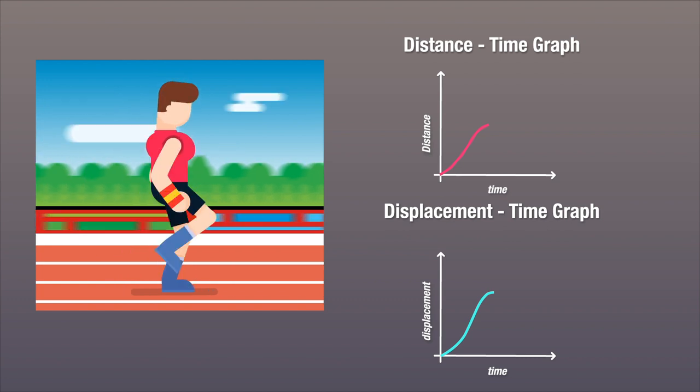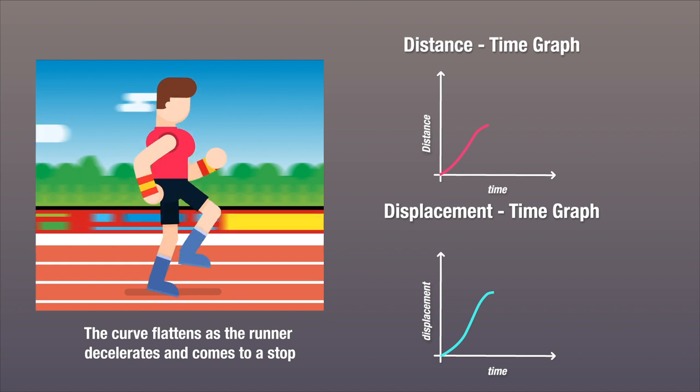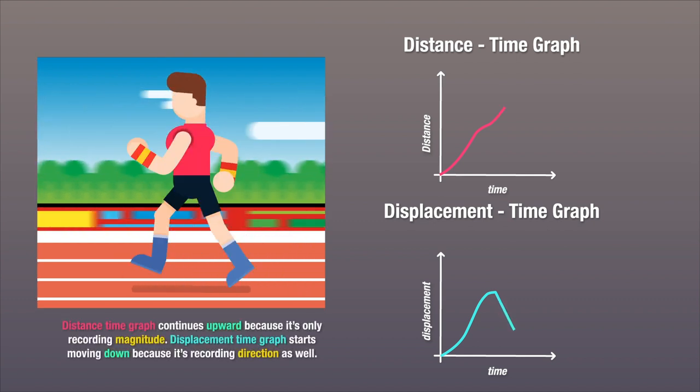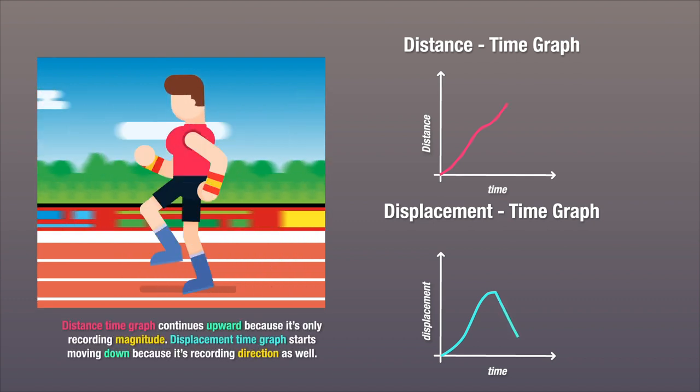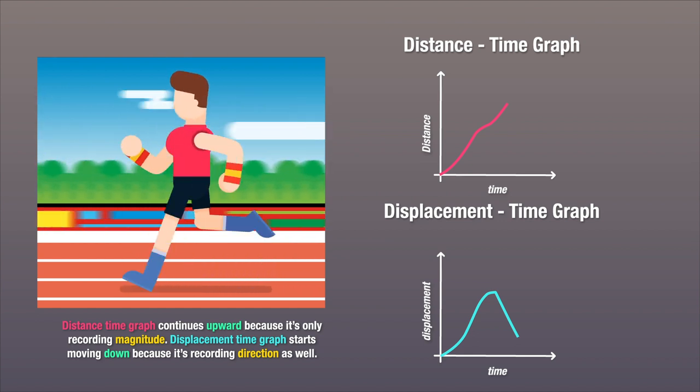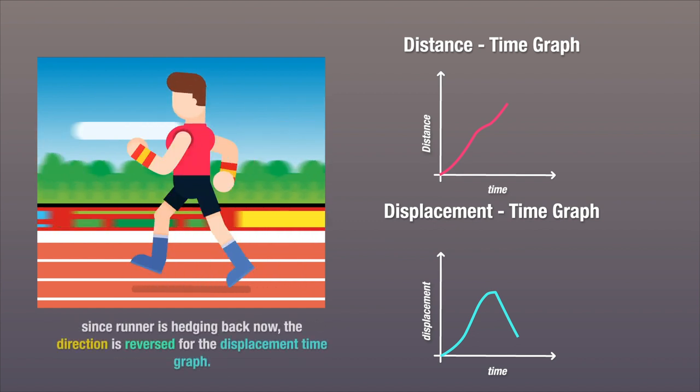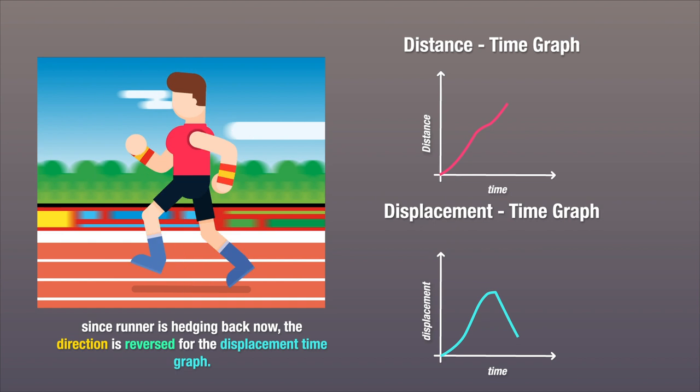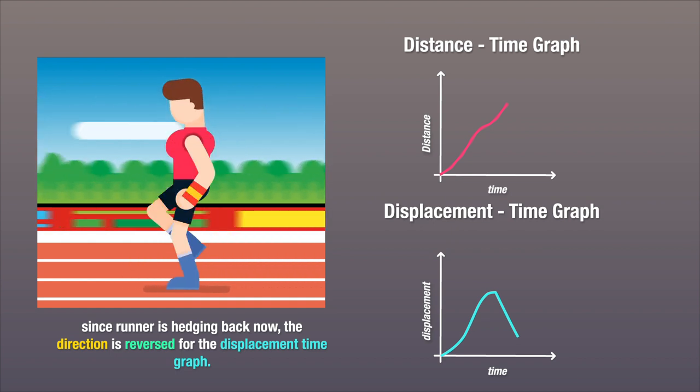Now it's time for the runner to turn around and head back. And this is where the distance time graph and the displacement time graph start to diverge. Since the distance time graph is recording a scalar quantity, it only counts the additional distance that the runner is traveling and therefore starts moving upwards again. But the displacement time graph is recording a vector quantity and the runner is now heading back towards the reference point. This means that the displacement between the runner and the reference point is starting to decrease, which is why the displacement time graph starts moving downwards.